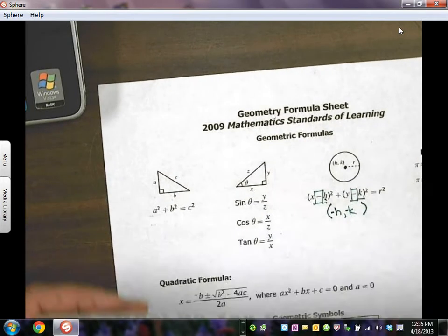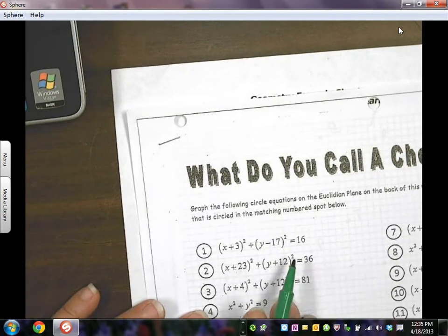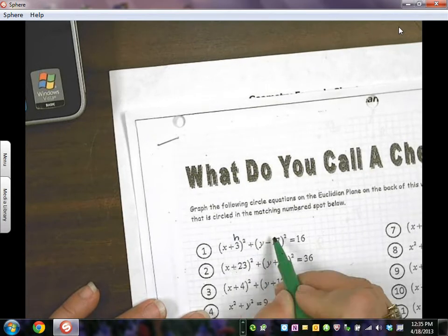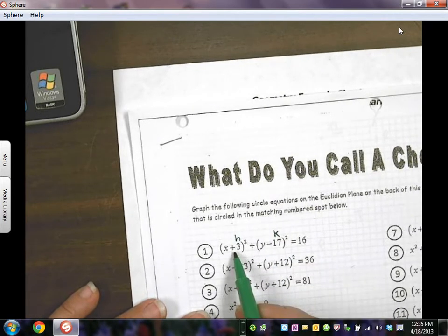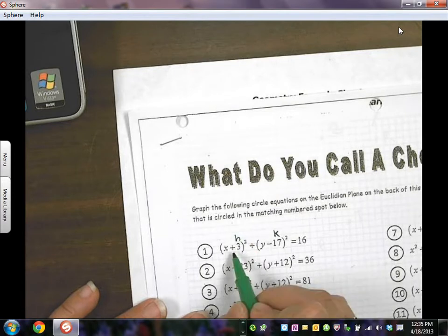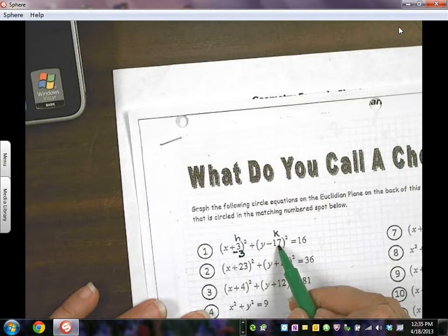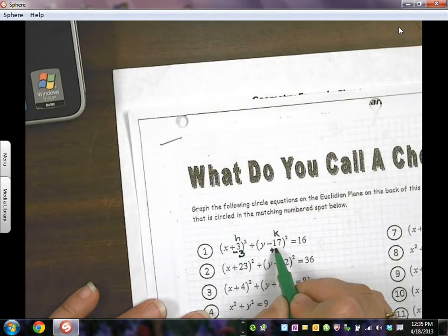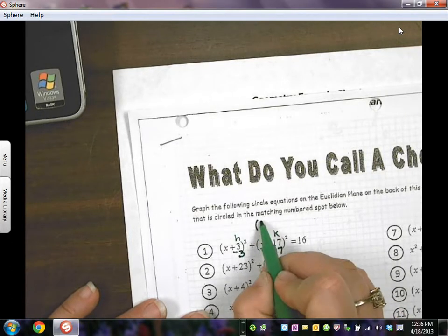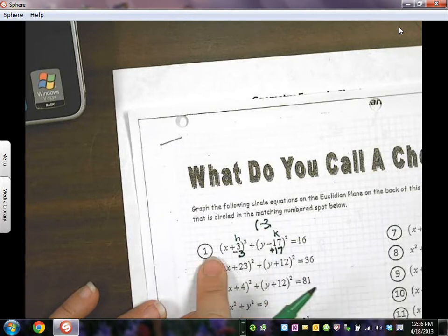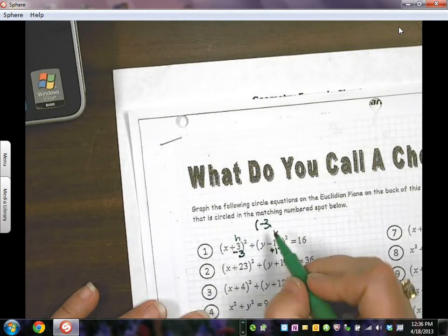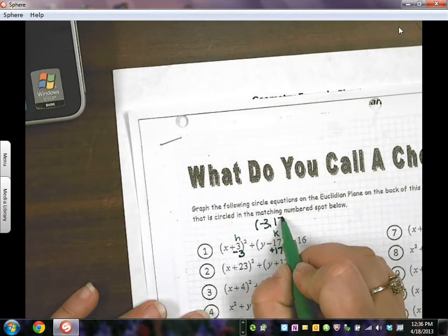So right here on this one, this is my H and this is my K, but this is a positive 3. What's the opposite of a positive 3? It would be a negative 3. Here's a negative 17. What's the opposite of that? Positive 17. So I know the center of the circle that goes with this equation is negative 3, 17.